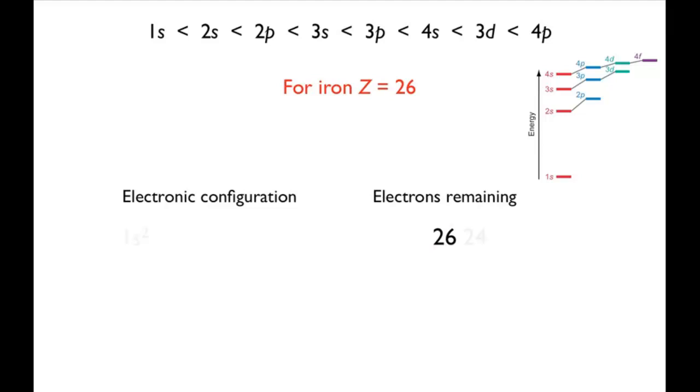For iron, two electrons go into the 1s orbital, two go into the 2s orbital, six go into the 2p orbitals, two go into the 3s orbital, and six go into the 3p orbitals. The 4s orbital is filled next, and two electrons go into this, followed by the remaining six in the 3d orbitals.